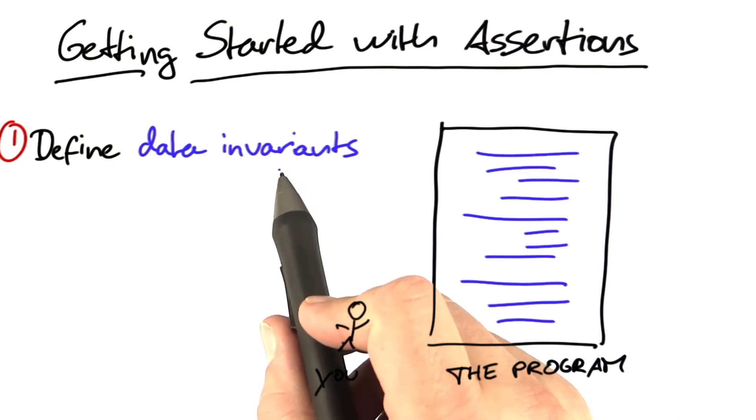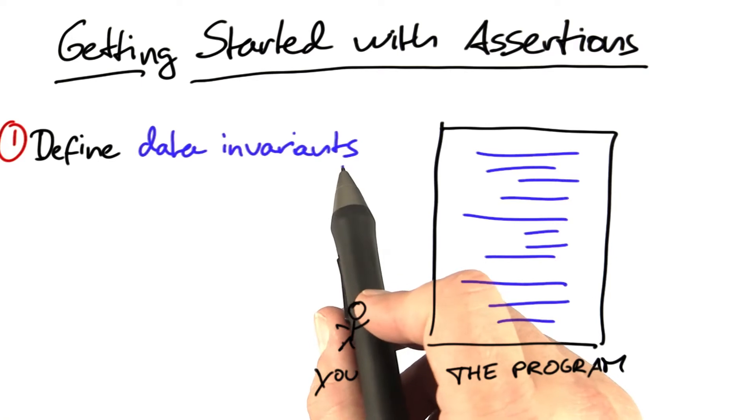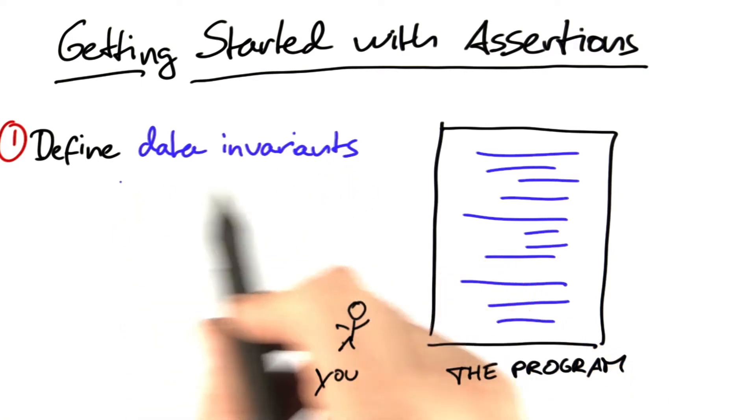I would suggest the first thing to do is to define data invariants. These will immediately cover large parts of the program state and catch lots and lots of defects.